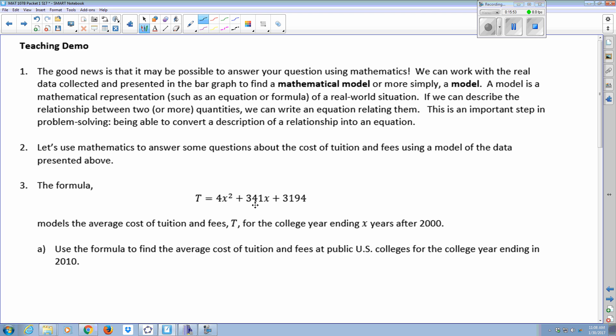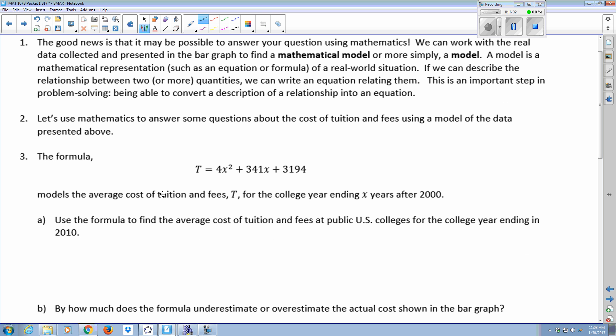What we want to try to do is somehow quantify this relationship using an equation. We are using the equation that we saw in GeoGebra with that parabola. I've rounded it to the nearest whole number. When you look at a formula or an equation like this, you have to know what the variables represent, or it's meaningless to you. This formula models the average cost of tuition and fees, T, for the college year ending X years after 2000. So X represents the number of years after 2000. You can think of 2000 as your base year or your initial year. It's when X equals zero, because 2000 is zero years after 2000. 2007 would be given the X value seven.